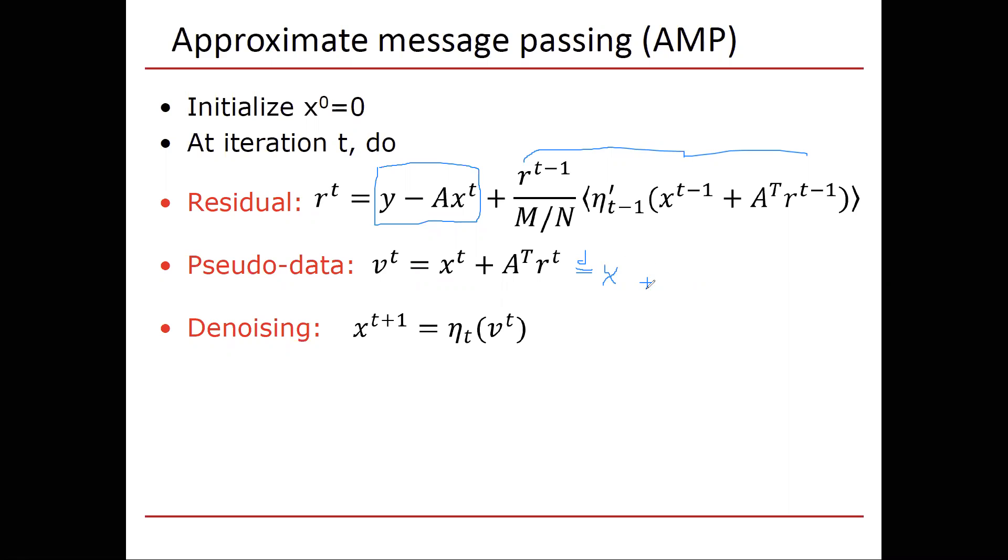And finally, the denoising step. x at the next iteration, t plus one, is a denoising function of the pseudodata vt. So the residual goes into the computation of the pseudodata. The pseudodata goes into the computation of the denoiser. And one more thing that I'd like you to note, the t means that in every iteration, every iteration t, we may use a slightly modified denoiser.